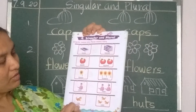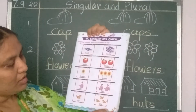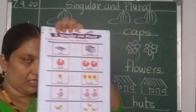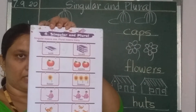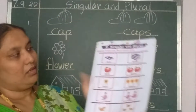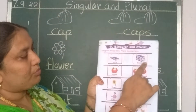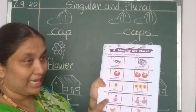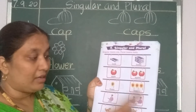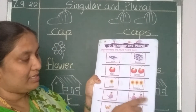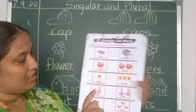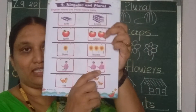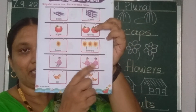Here in your course book, page number 13, pictures are there with the spellings. Try to read this. Book, books. Apple, apples. Flowers. Man, men. Be careful while writing this — man. You should not write man's here. See M-E-N, men.